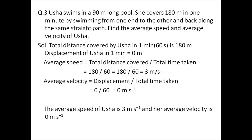Let us understand speed and velocity with the given example: Usha swims in a 90-meter long pool. She covers 180 meters in one minute by swimming from one end to the other end and back along the same straight path. Find the average speed and average velocity of Usha. Average speed is total distance divided by total time taken — distance is 180 meters and time is 1 minute = 60 seconds — so average speed is 180 ÷ 60 = 3 meters per second.